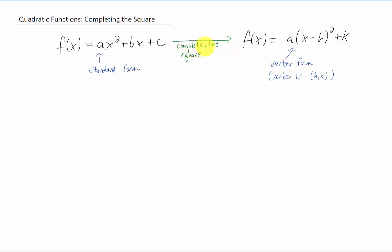To do that, we're going to use a method called completing the square. Let's complete the square on this function, x squared plus 6x plus 10. Step one for completing the square is going to be to find b over 2 squared. Now b here is 6 in this example. If we find 6 over 2 and square it, that's 3 squared, which is 9.